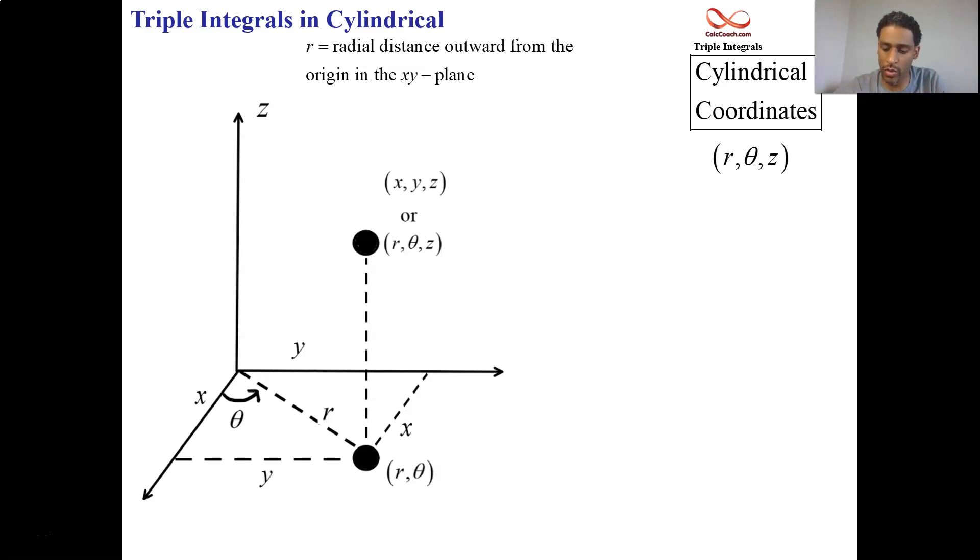Theta is the angle that you spin or you swing away from the positive x-axis in a counterclockwise manner. That's the positive theta. And then finally, z is that same distance, the vertical distance off the x, y plane.